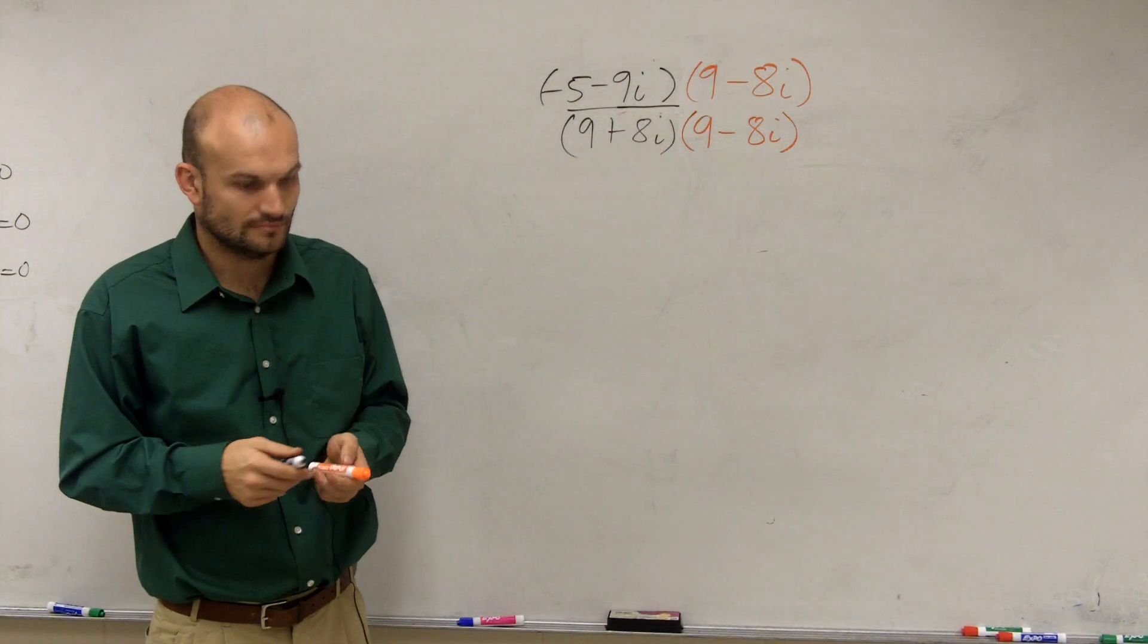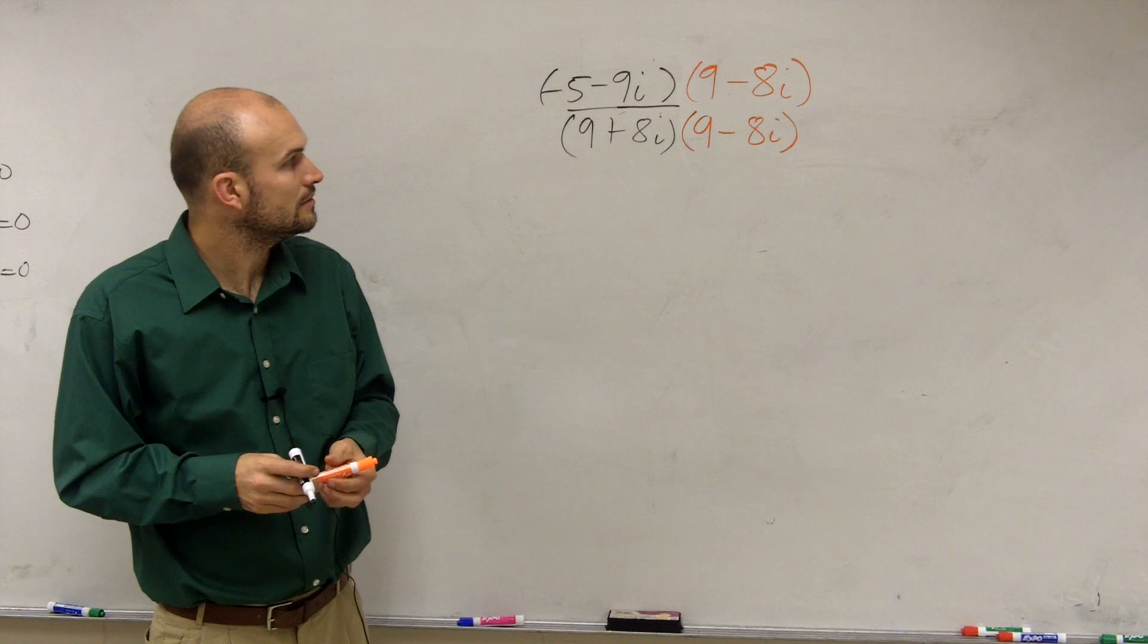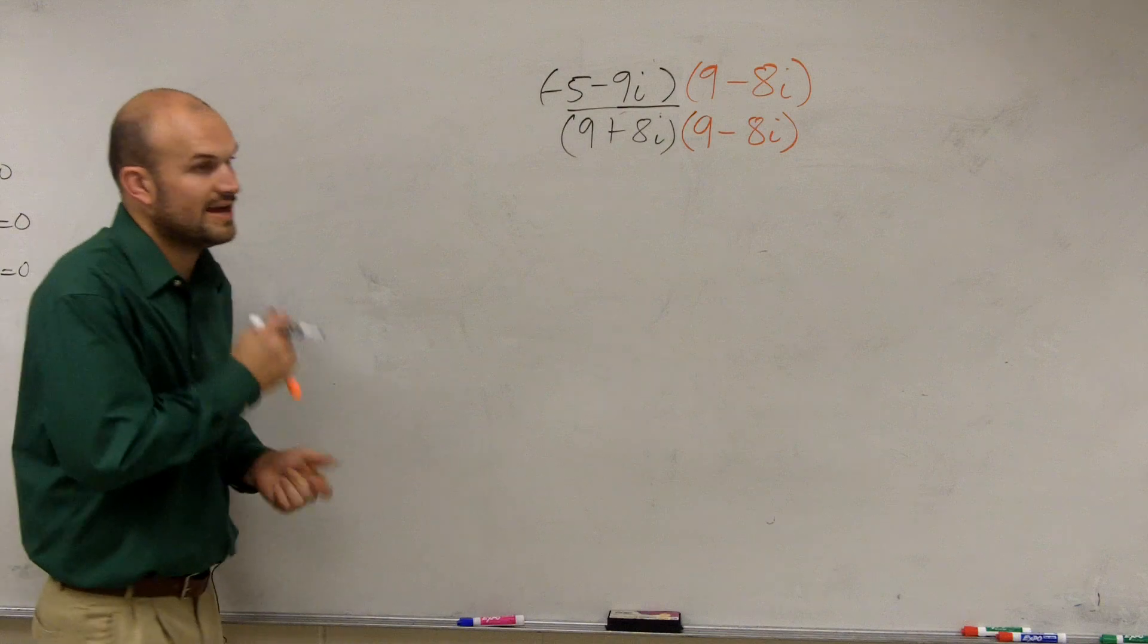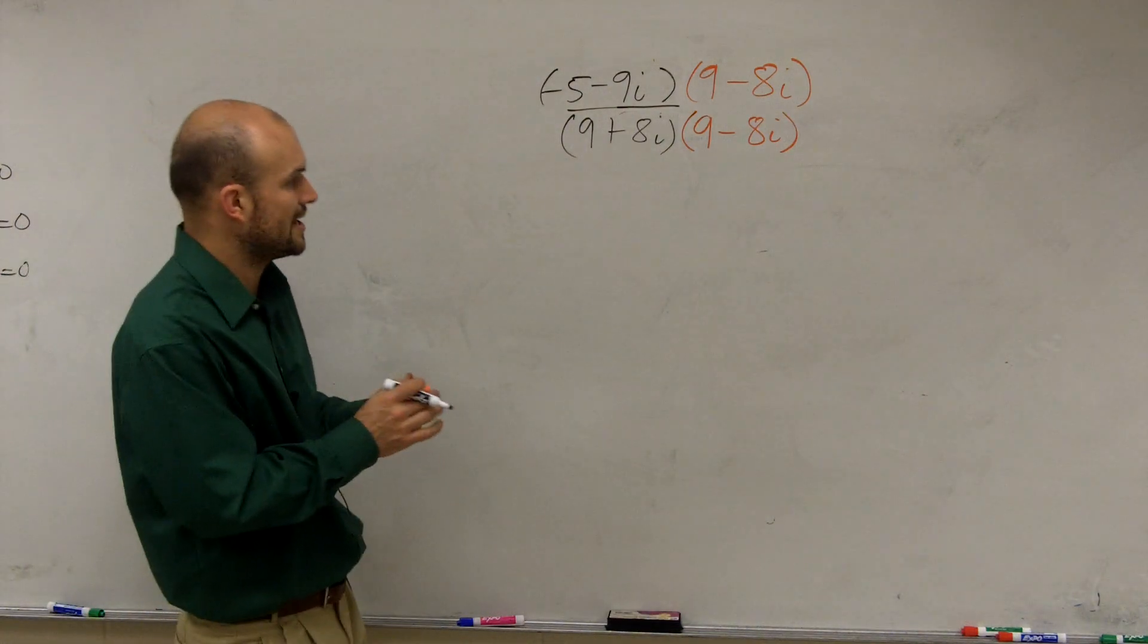Wait, so you did it wrong on the top then, so there should be 9 plus 8? No, no, it's just you take it. Oh, you just do the denominator? Yeah, you just do the denominator. Then you got to make sure you multiply by the same on top and bottom.